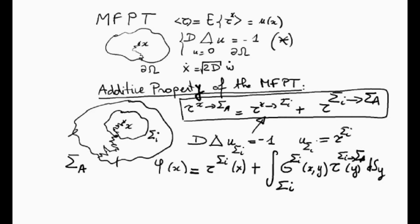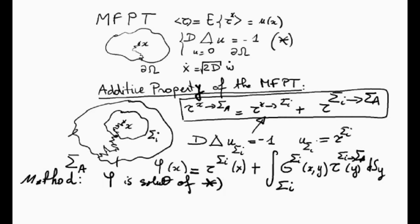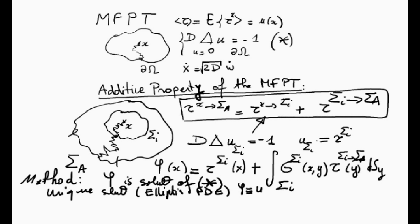The method consists in showing that φ is a solution of the PDE (star). If we show this, then since there is a unique solution — because this is a classical elliptic PDE and we can use the maximum principle — the only possibility is that φ equals u, which is exactly the additive property of the mean first passage time.